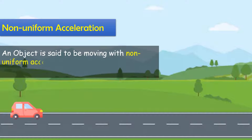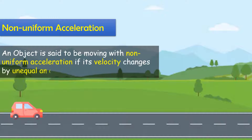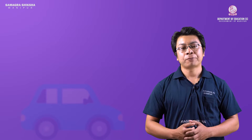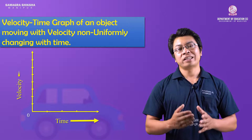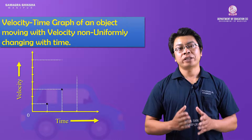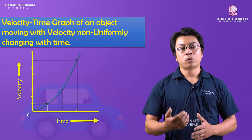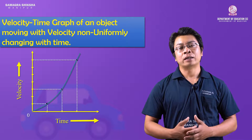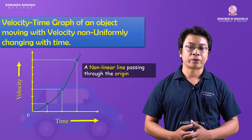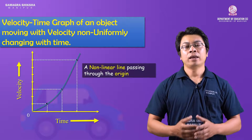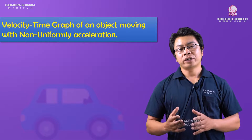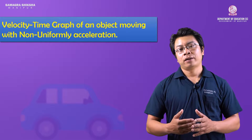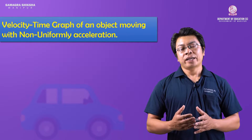When the body's acceleration is non-uniform, the velocity-time graph is non-linear.